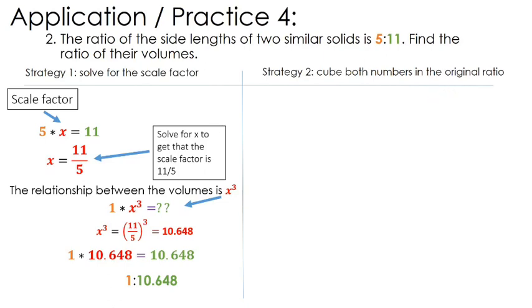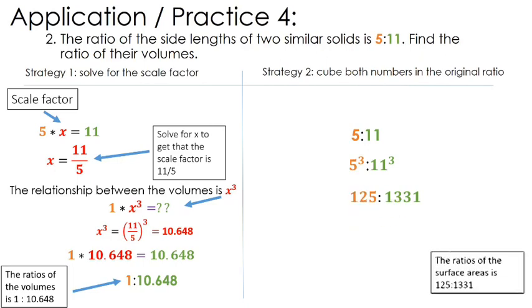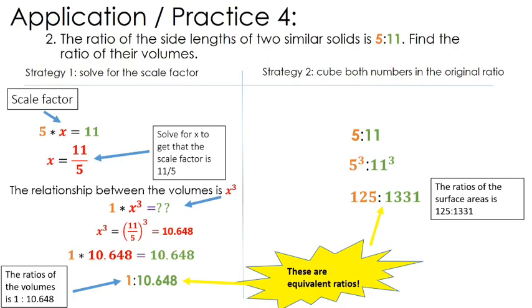Let's use the other strategy. Starting with the 5 to 11 ratio, since we're talking about volumes, we cube the 5 and cube the 11. That creates the ratio 125 to 1331. You might think that looks different, but it is actually the same ratio as 1 to 10.648 — if you treat these like fractions and simplify them, you find they are equal. Both are perfectly legitimate ways to solve problems like this.